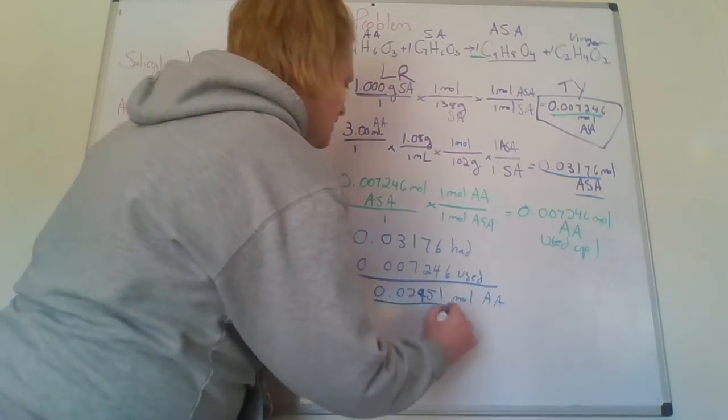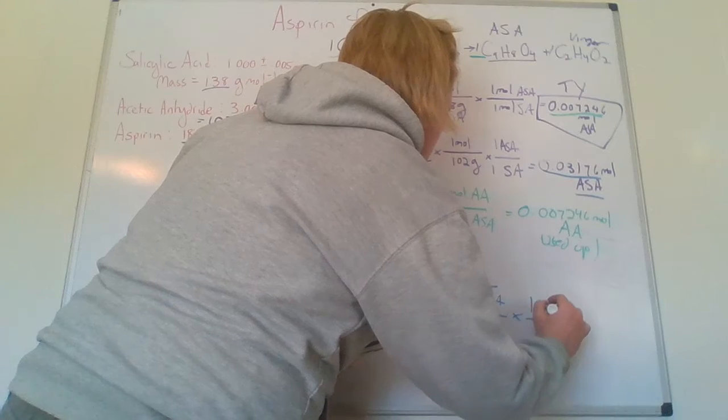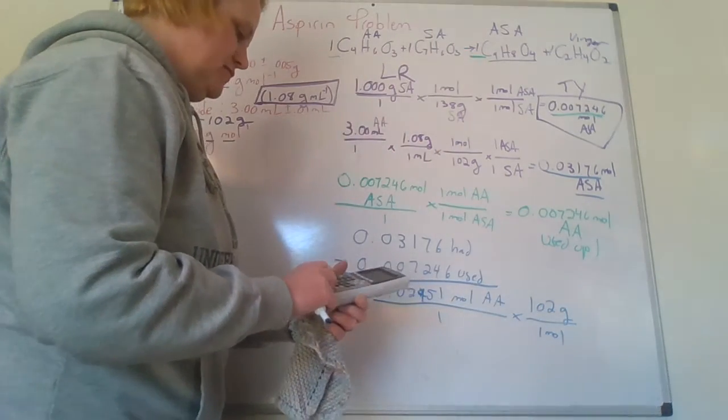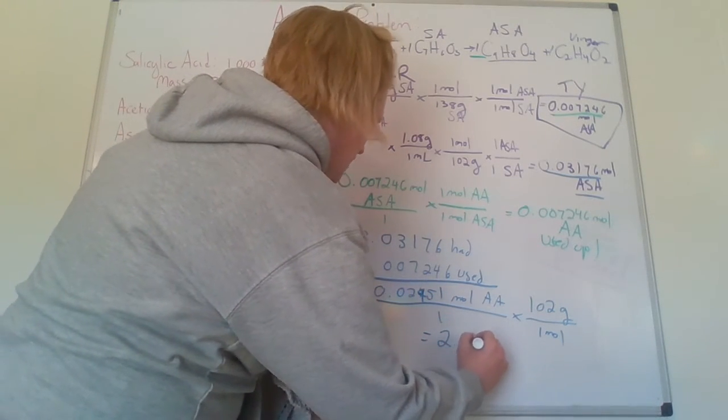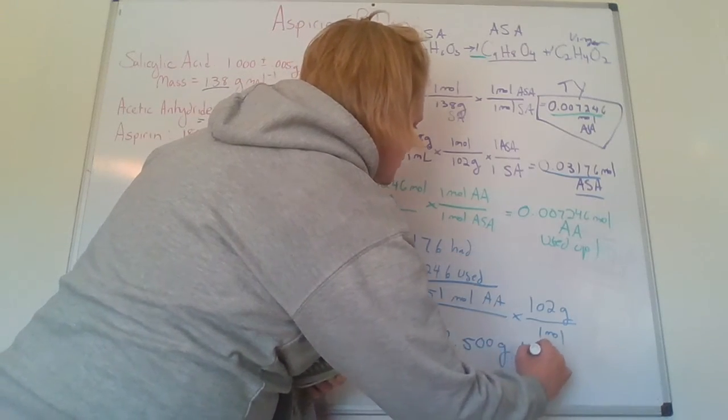Last step, if I take that and I can convert it back to grams because there's 102 grams for every one mole. And I find that I have 2.500 grams of acetic anhydride left.